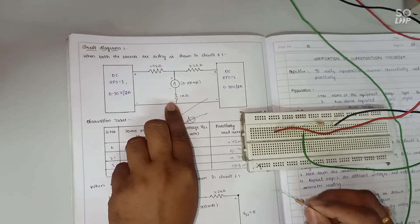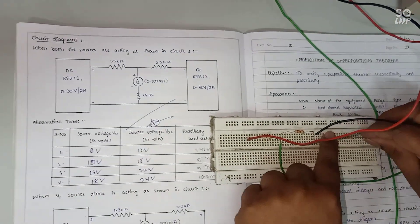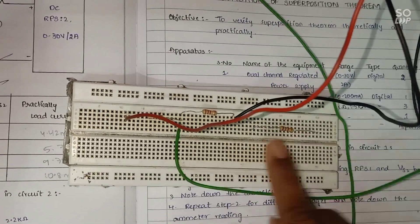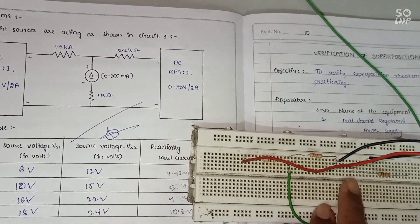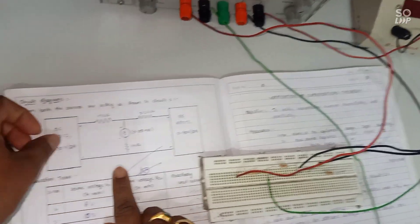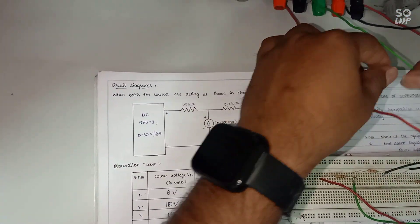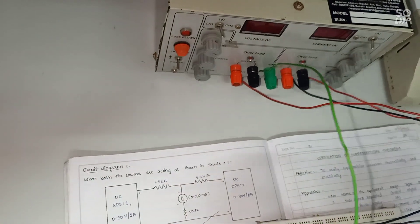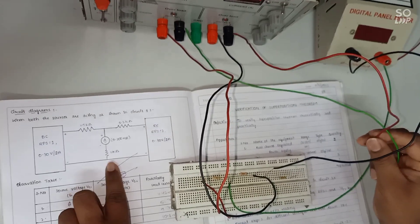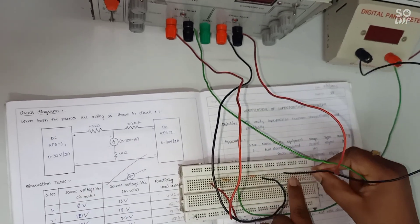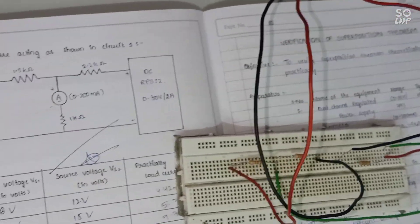Next, I am taking a 1 kilo ohm resistor and connecting it on the breadboard. The ammeter negative is connected at one end of the 1 kilo ohm resistor. As seen in the circuit diagram, VS1 negative, resistor 1 end, and VS2 negative are all connected at a common point. VS1 negative and VS2 negative are connected to the resistor end, and the two supply negatives are connected at the 1 kilo ohm end. This completes the connection for the superposition theorem verification.